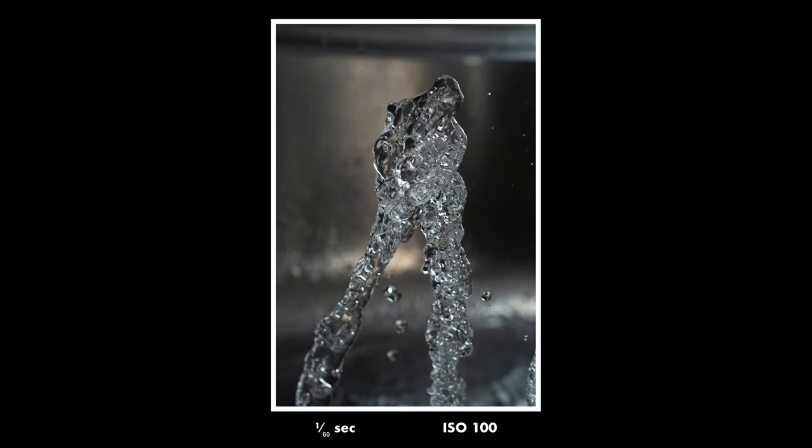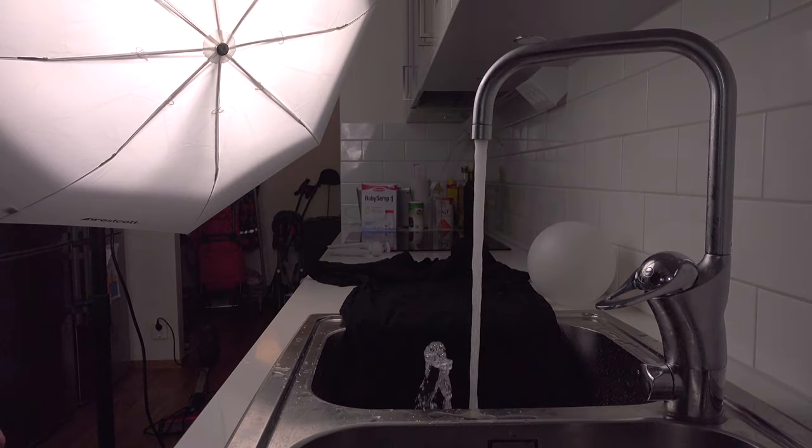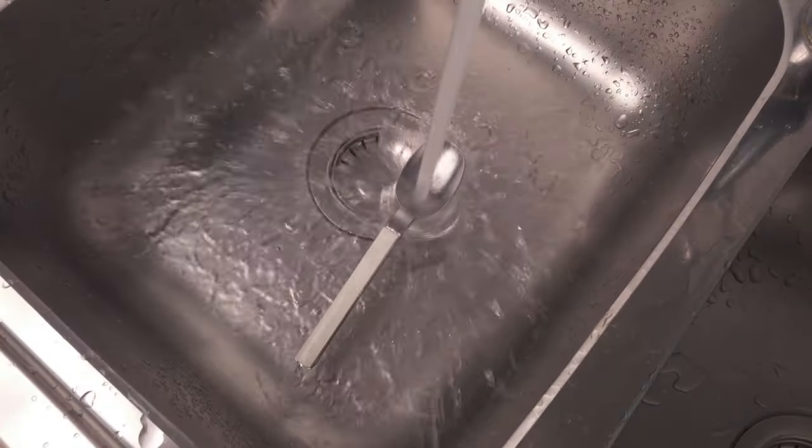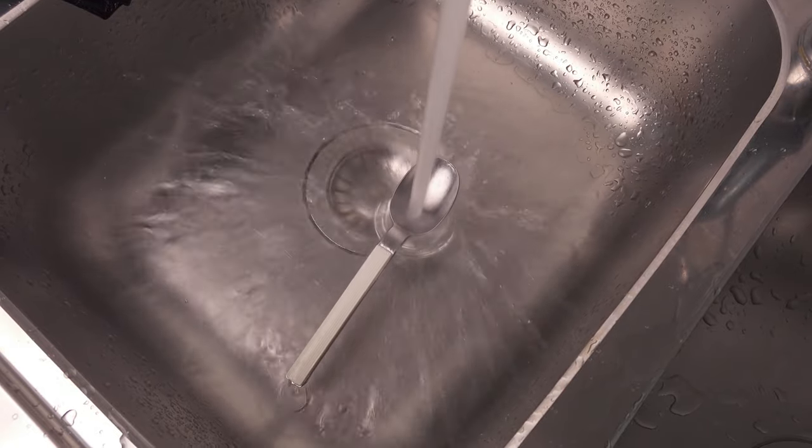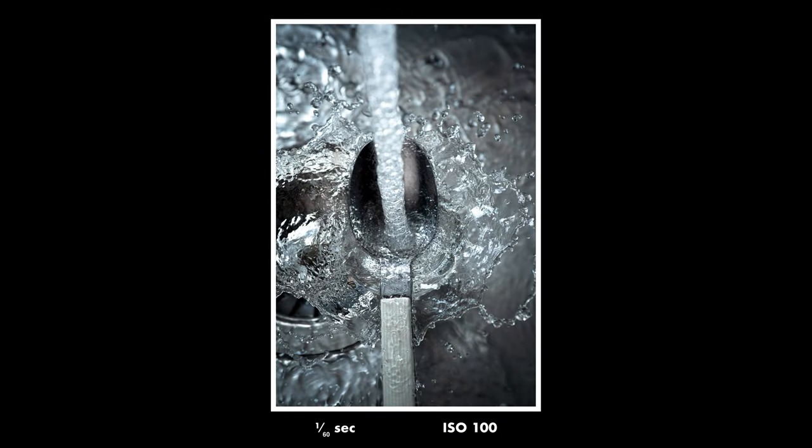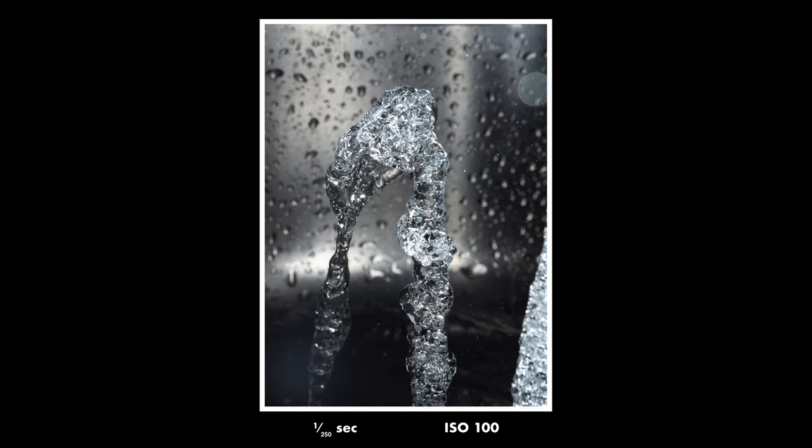And if you don't have that fancy plastic dome diffuser that I have, you can still get pretty much the same look if you just point the flash towards something white that is close to the water stream. Maybe you have white tiles or maybe the underside of your cupboard is white. Then just point the flash towards those places and you will get similar results as with a diffuser.